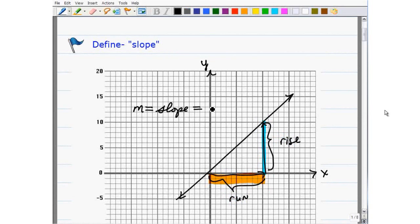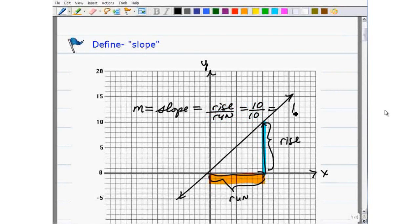The slope by definition is the rise over the run. We're comparing those two values. So in this particular case, the line is rising 10 for every 10 it runs out. So this line has a slope of 1.